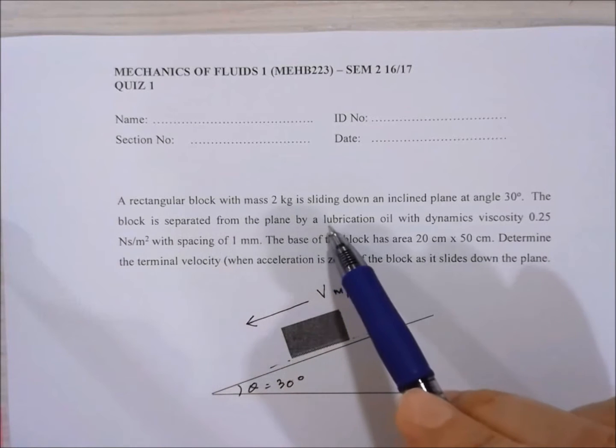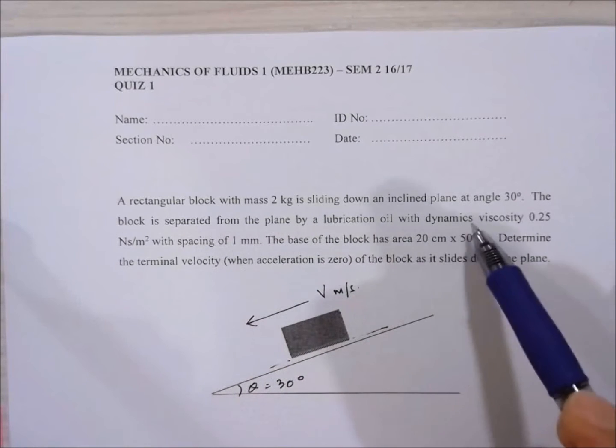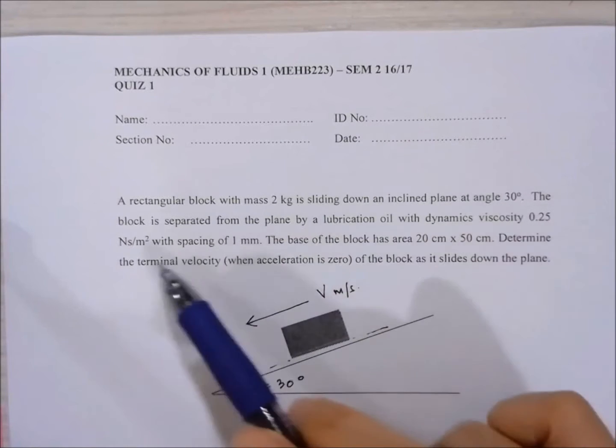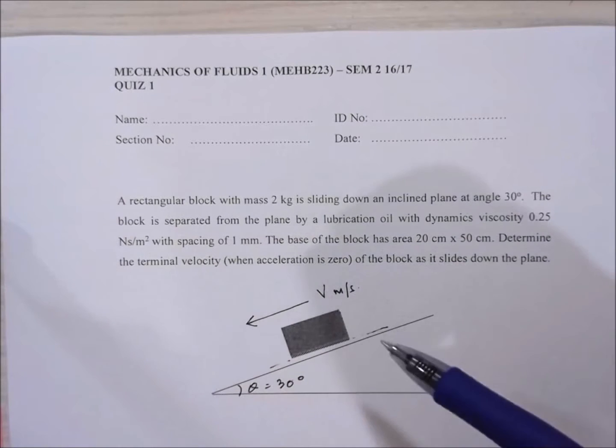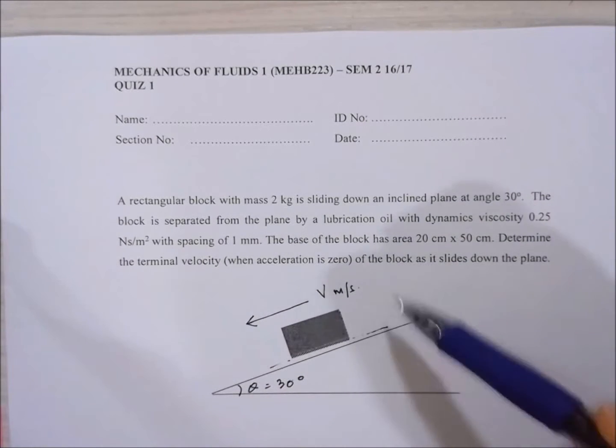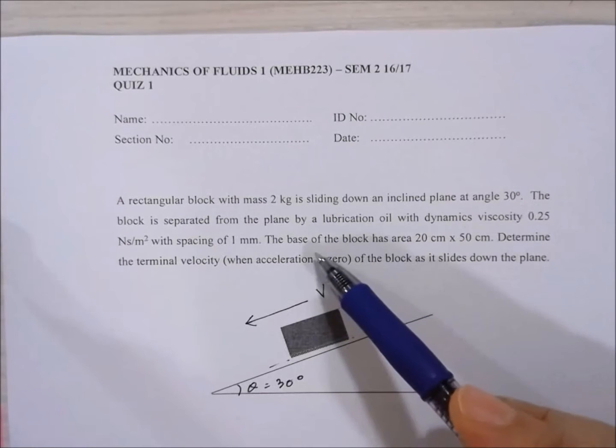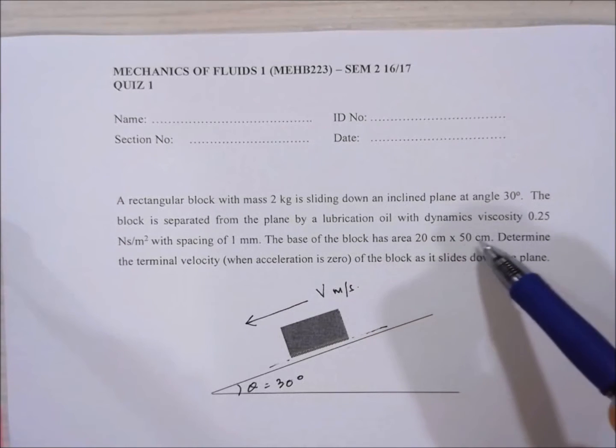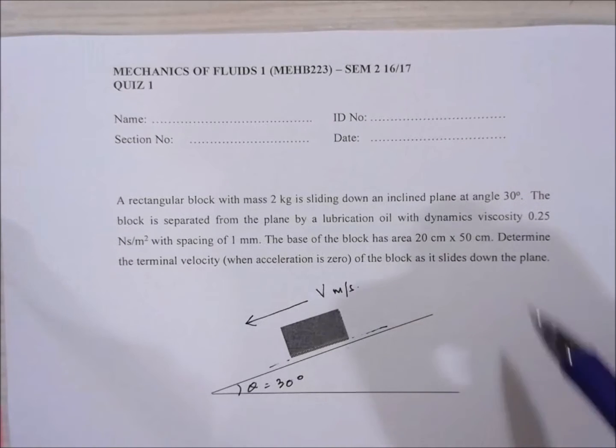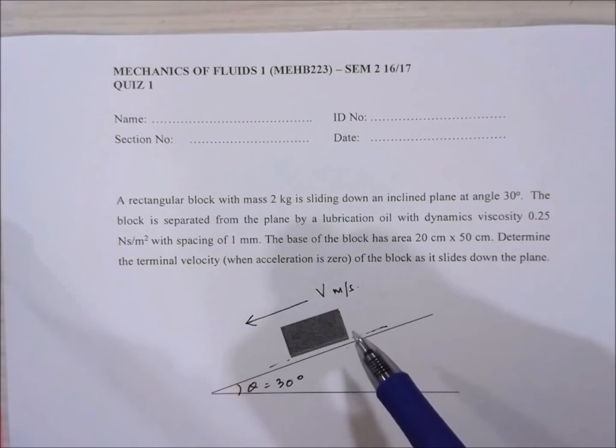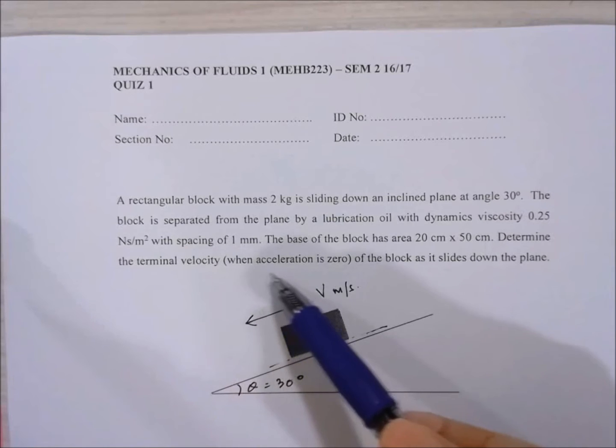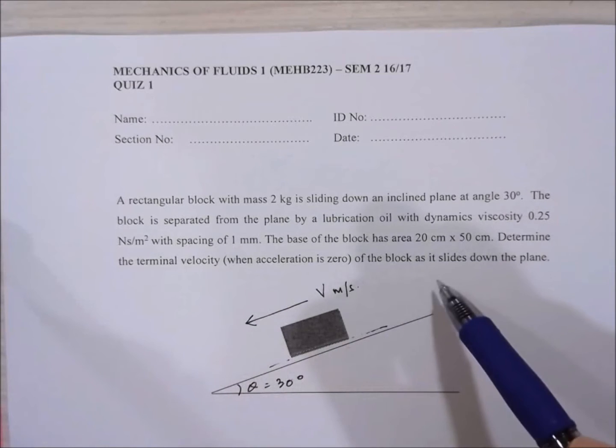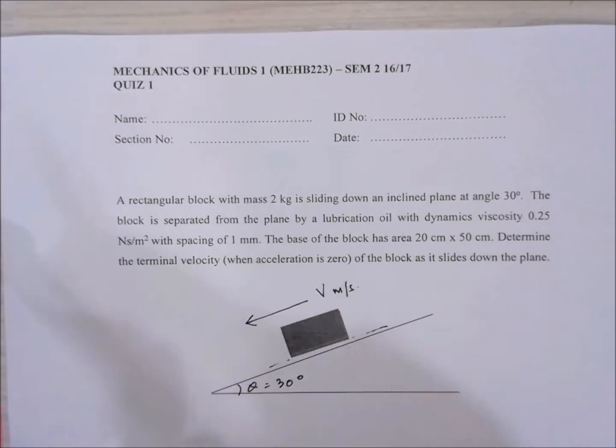The block is separated from the plane by a lubrication oil which has dynamic viscosity of 0.25 Ns per meter squared, and the spacing between the block and the ramp is 1 mm. The base of the block has area of 20 cm by 50 cm, and we are asked to determine the terminal velocity when the acceleration is zero of the block as it slides down the plane.